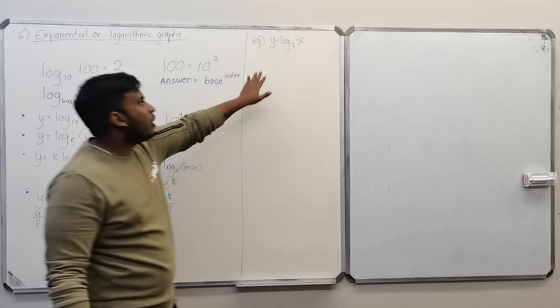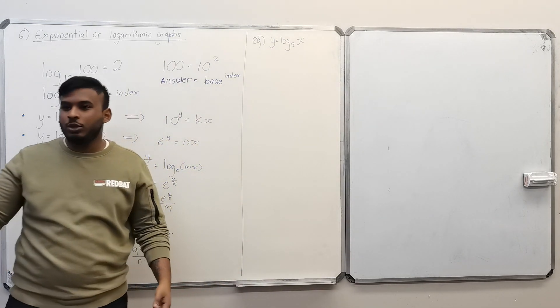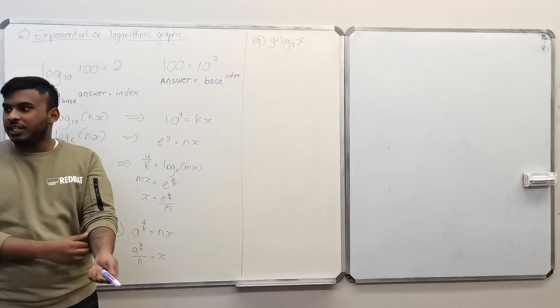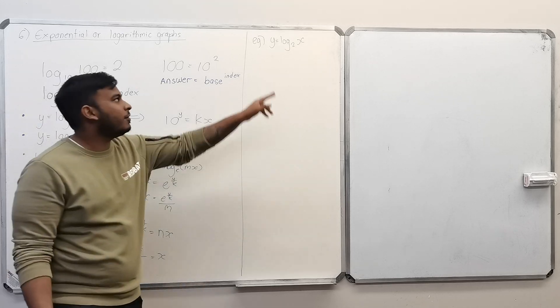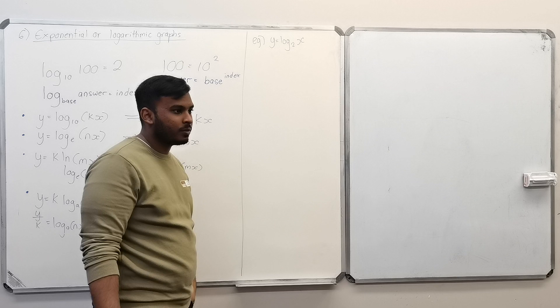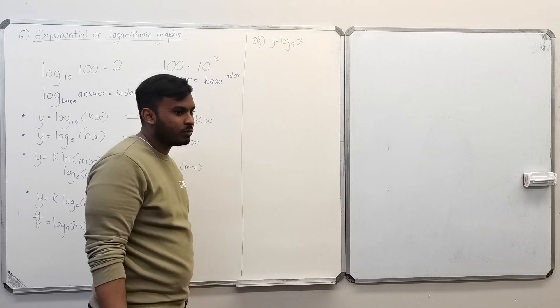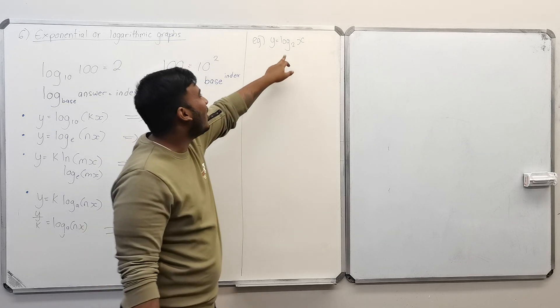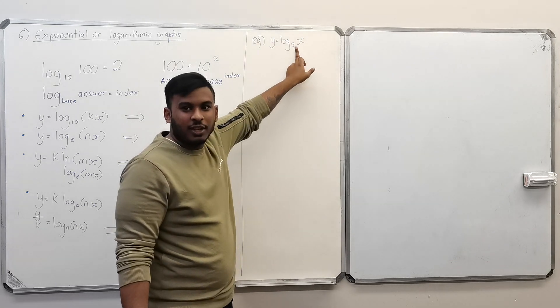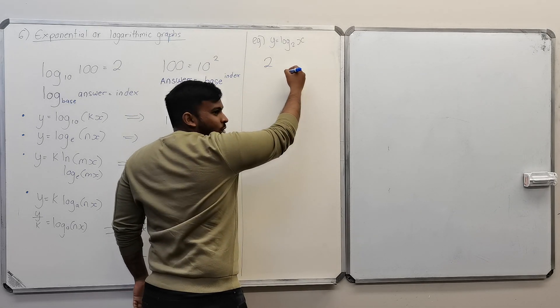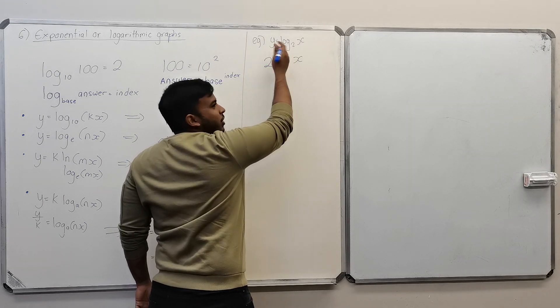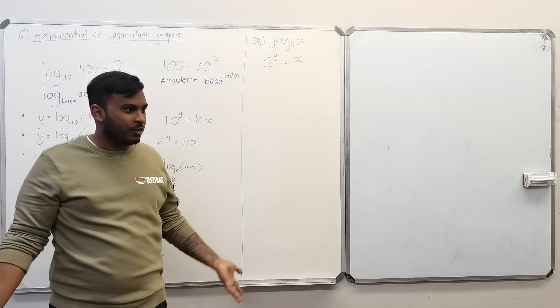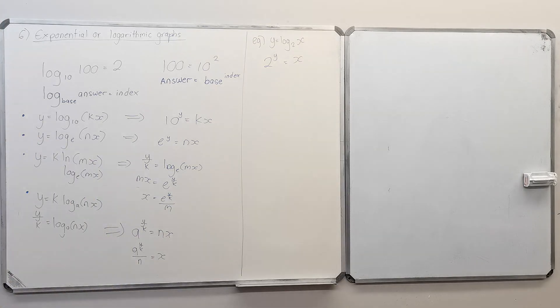You've got y = log(2x) and you want to basically draw the graph. What would you do first? You'll convert it into exponential form. Log base answer. Your base is going to be 2, your answer is going to be x, this is your index. So 2^y = x, that is your exponential form.